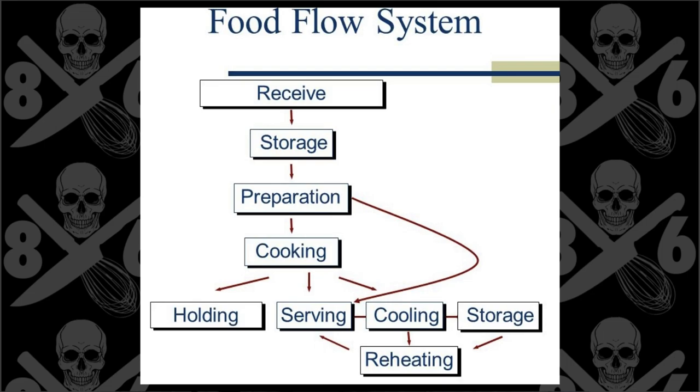You don't always do every single one of these steps every single time. In some cases you might prepare, cook, and serve it. Other times you prepare certain items, you pre-cook certain things, and then you reheat them later. If you're in a place like Applebee's, they'll cook all the food and then you'll throw it in Chef Mike.